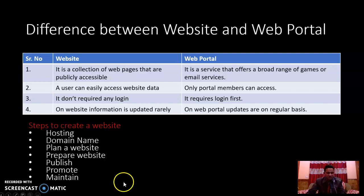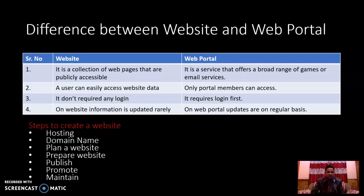Steps to create a website: first, you need to host — meaning you need to create the website. You will take a domain name, plan for the website, then prepare the website. After preparation, you will publish it on a particular URL. After publishing, you will promote the website. Promotion is required for ranking the website. And lastly, you will maintain it — updating it on a daily or routine basis as needed. That is the maintenance stage.